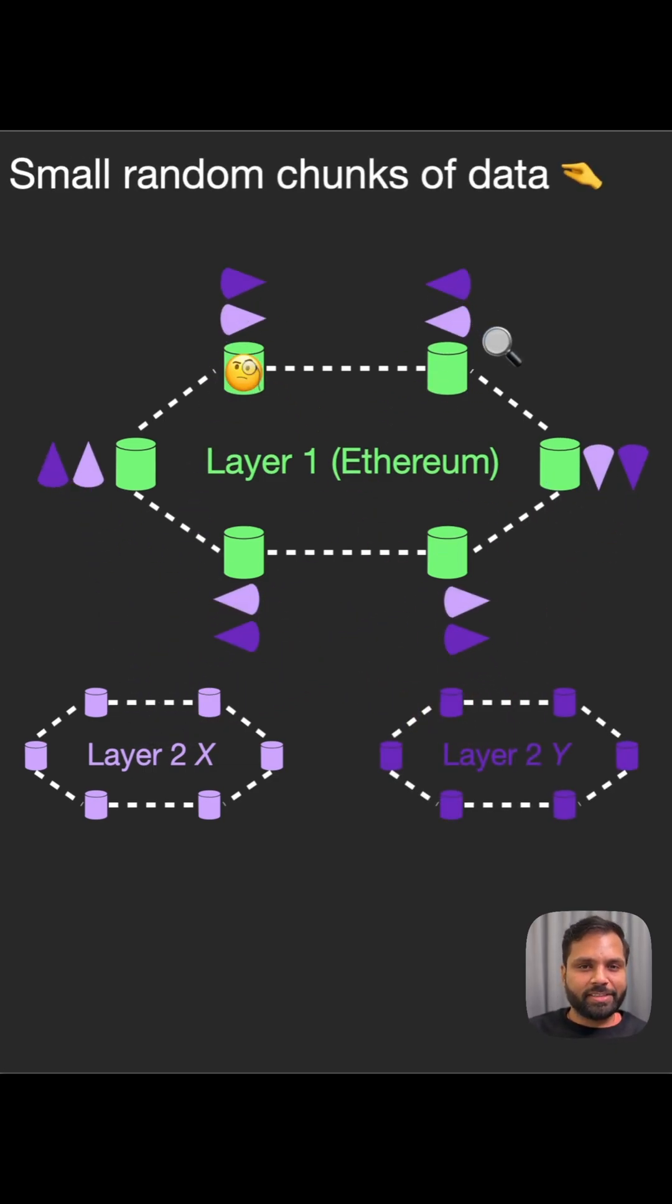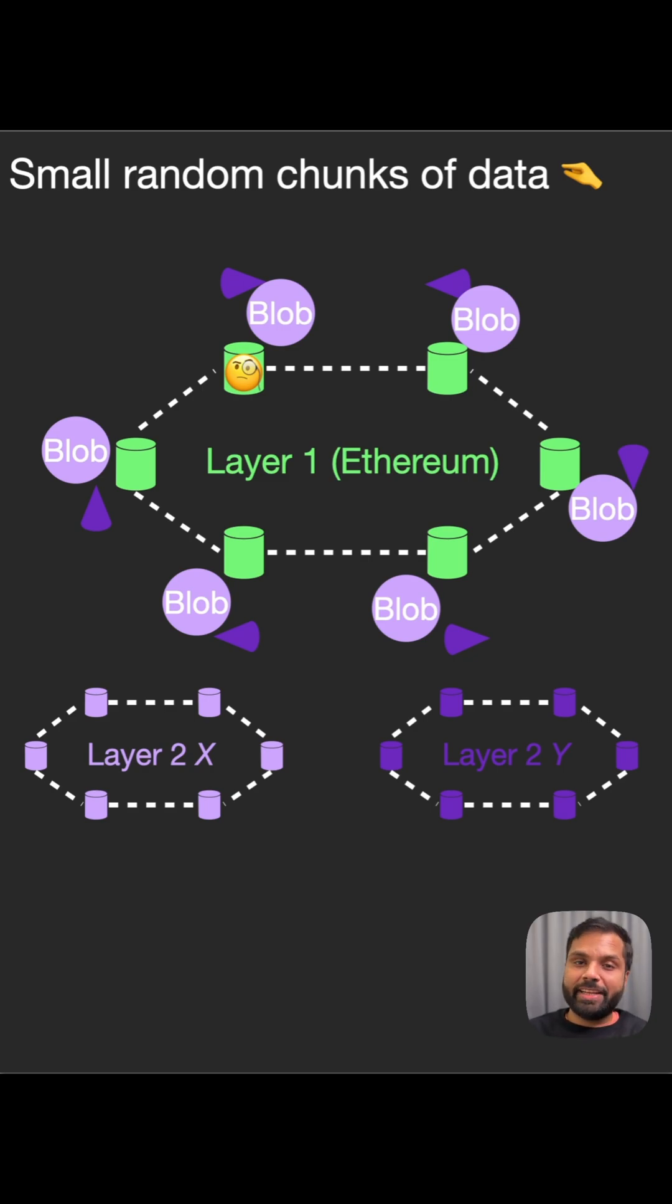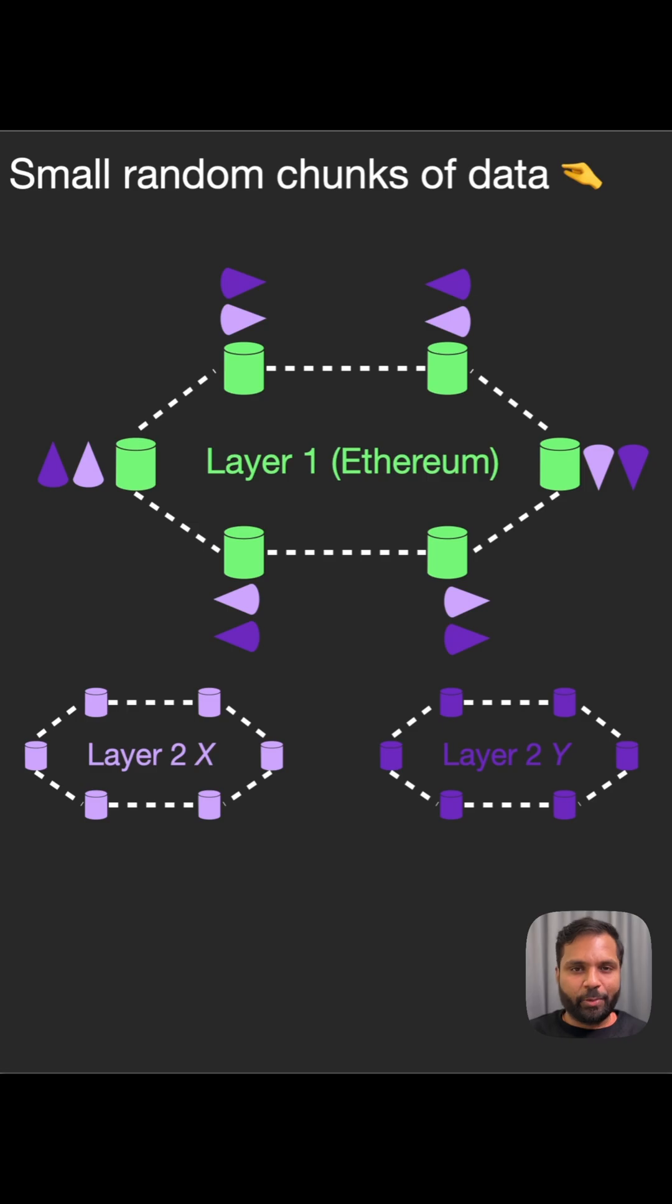Nodes then sample others' data pieces to ensure that the entire blob is available. By using advanced math with erasure codes, the network can reconstruct missing pieces, ensuring that no single node requires all the pieces.